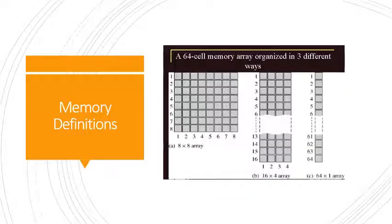Let us first discuss about what is a memory. Memory is nothing but a collection of cells capable of storing binary information. It contains electronic circuits for storing and retrieving information, and it is used to provide temporary or permanent storage capability. Memory is a semiconductor device which consists of arrays of elements that are generally latches, capacitors, or MOSFETs.